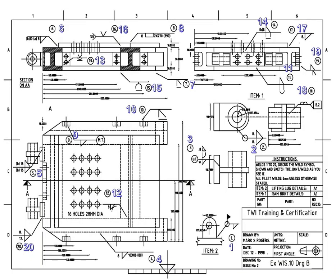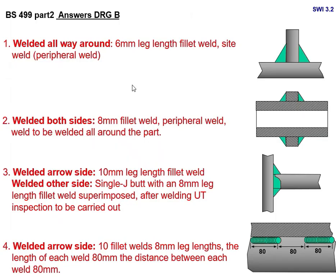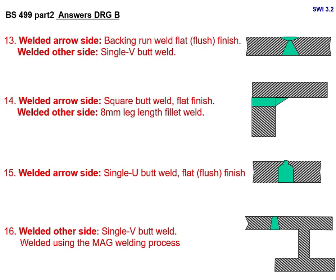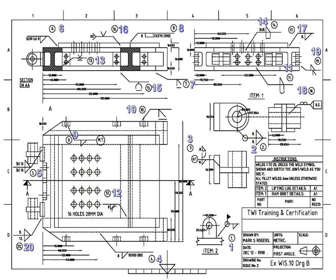Joint number 15 — you should know this joint configuration well. Welded arrow side: single U-butt, 12 mm, flat finish. This is single U-butt bar 12, flat finish.